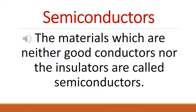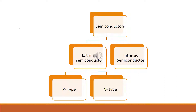Semiconductors are materials which are neither good conductors nor insulators. There are two types of semiconductors: intrinsic semiconductors and extrinsic semiconductors.